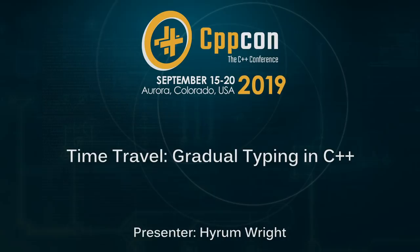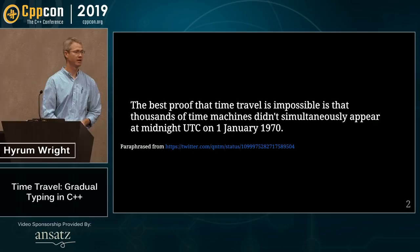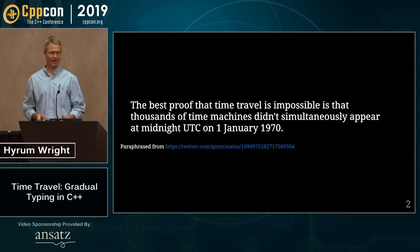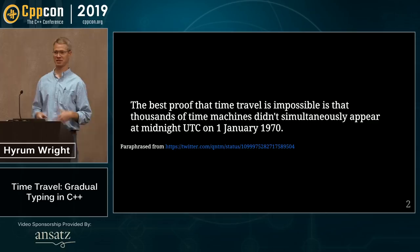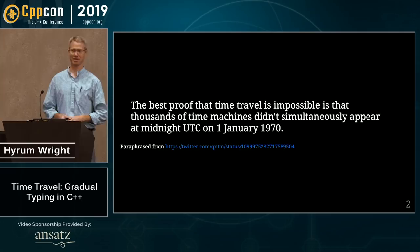Welcome to my talk. We'll be talking about gradual typing in C++. I'm sorry to disappoint about the time travel part — we already have an existence proof that time travel isn't a thing, because if it were, all those misconfigured time machines would have shown up at the beginning of the epoch. So sadly we're back to just gradual typing in C++.